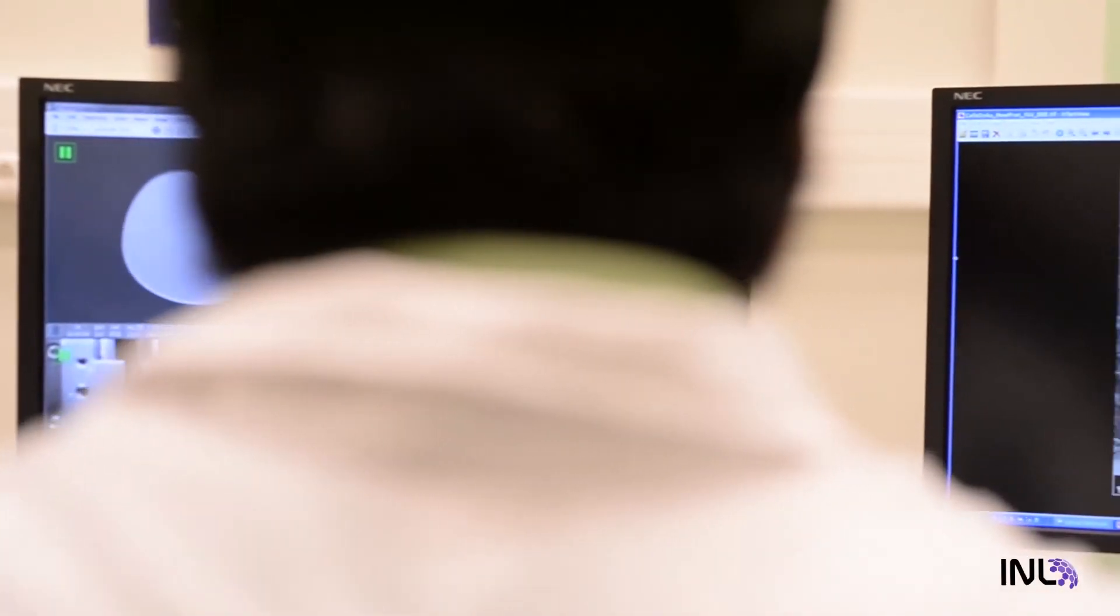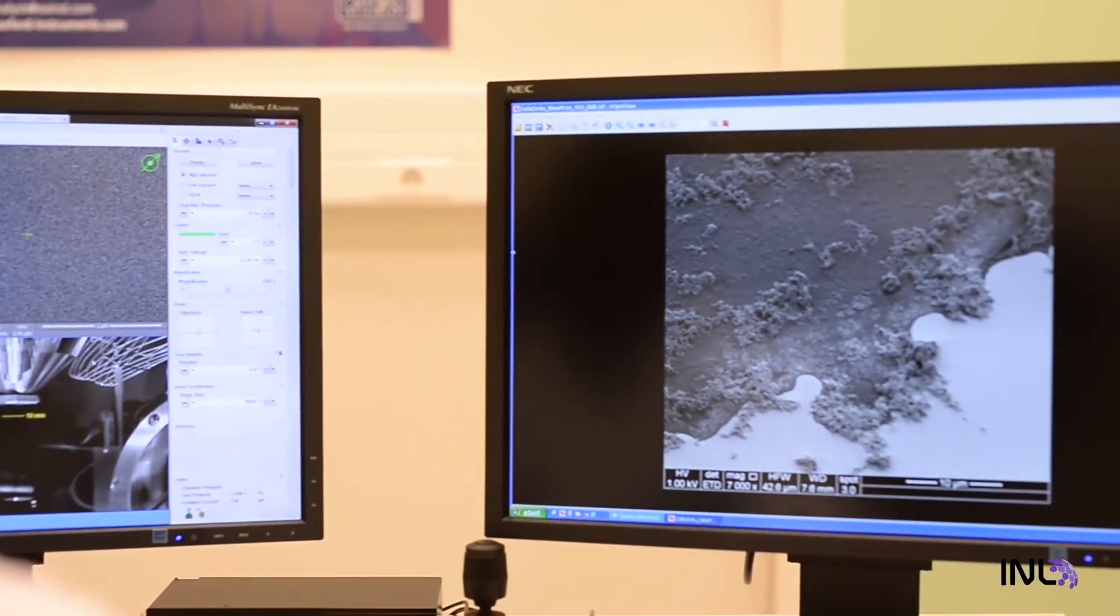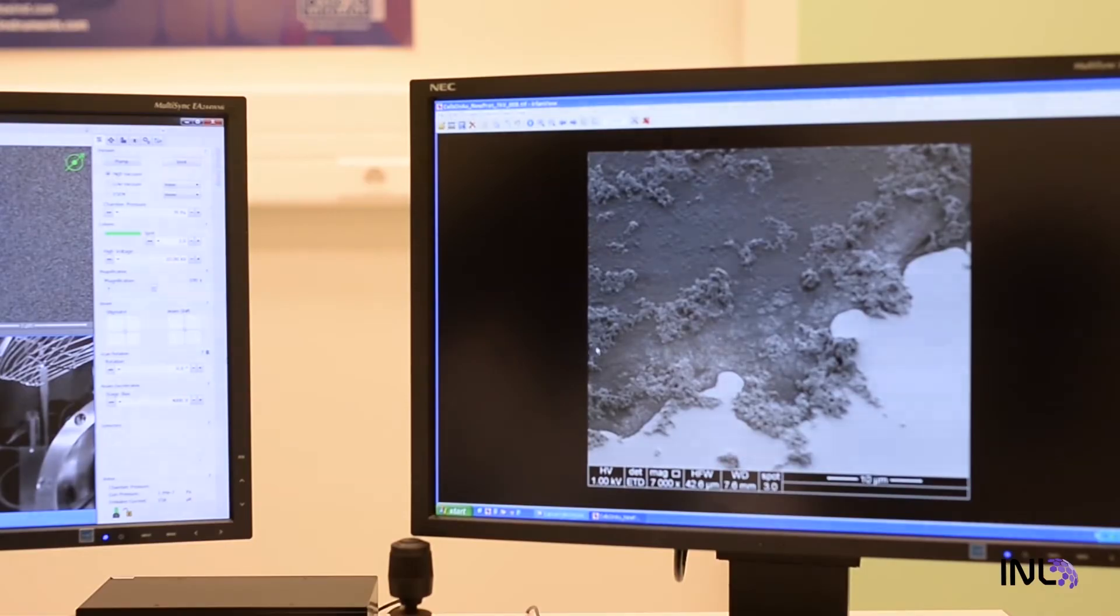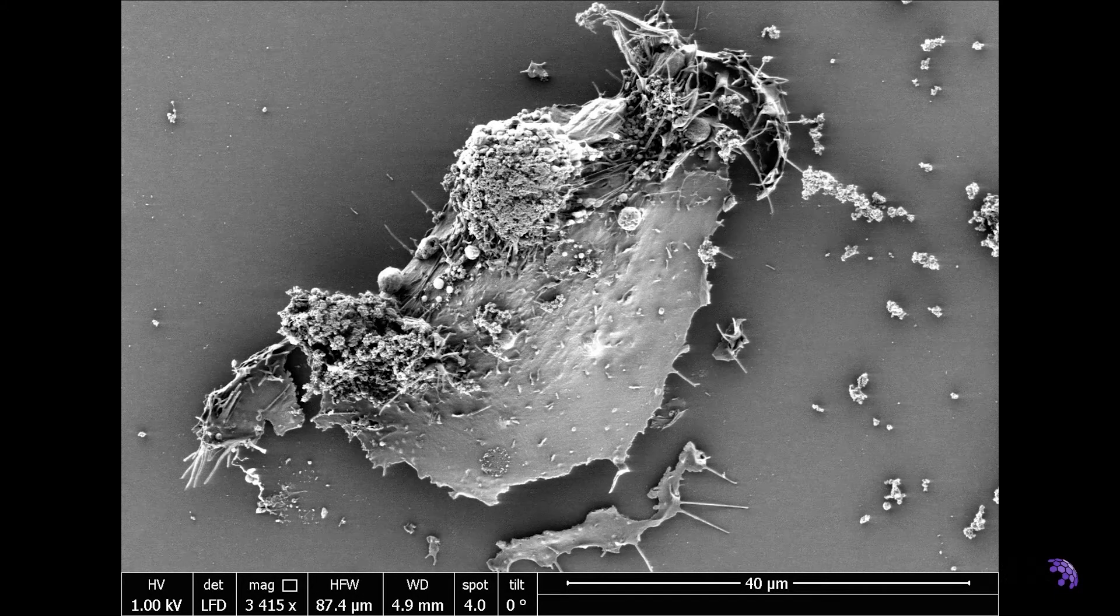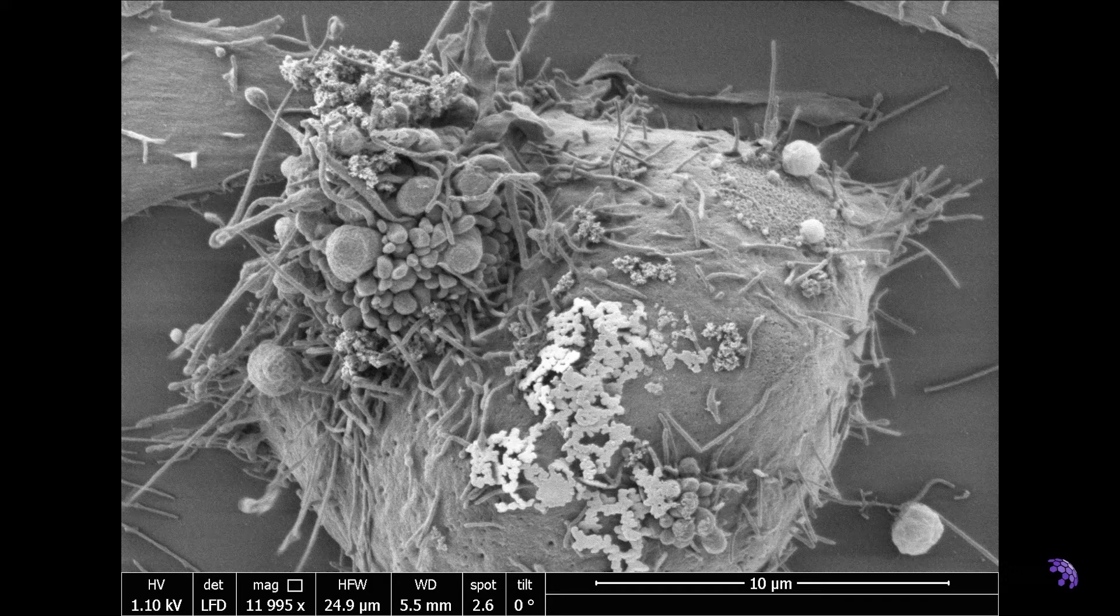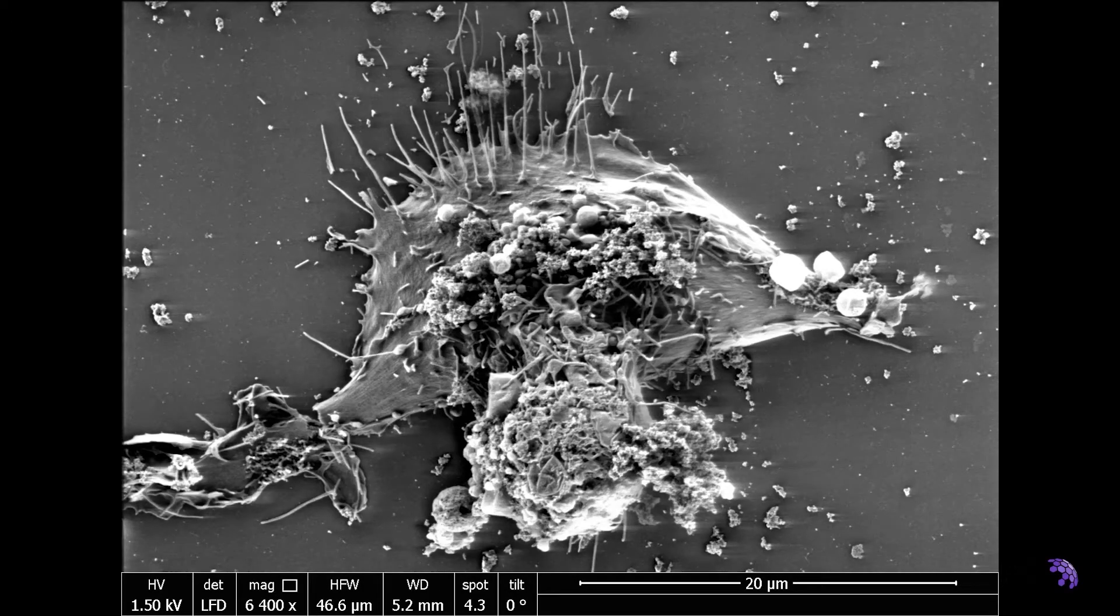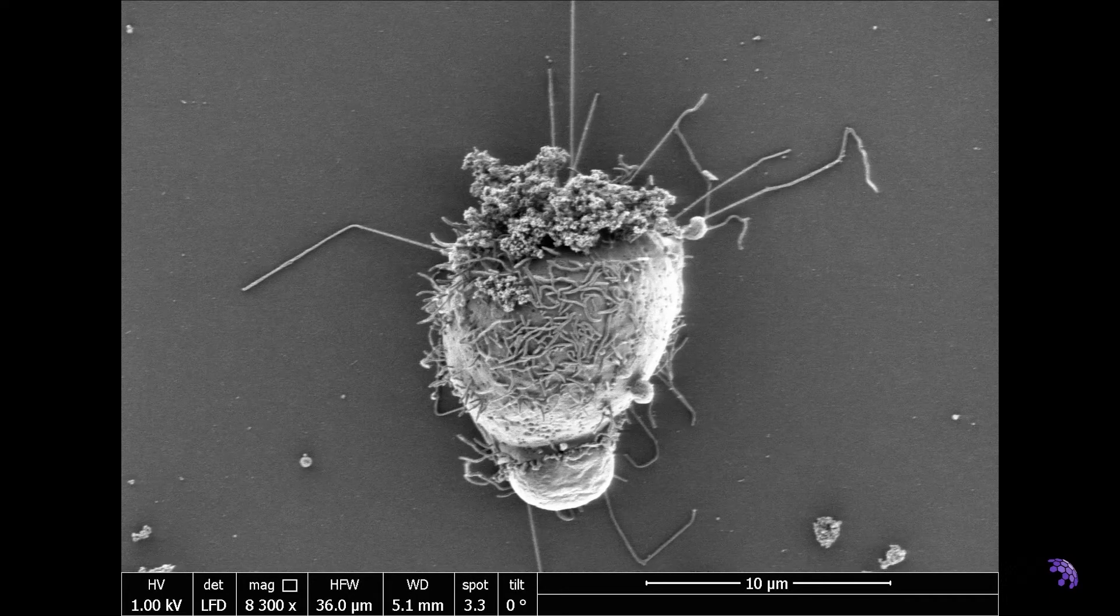This SEM has special components and detectors that allow imaging in presence of some water vapour rather than in vacuum. Nevertheless, the cells need to be carefully prepared to avoid being destroyed during the SEM imaging. In these images we can see, for example, what happens when magnetic iron oxide nanoparticles are used to kill cancer cells, or how different particles attach to bacteria for developing possible new antibacterial treatments.